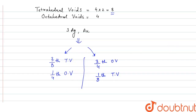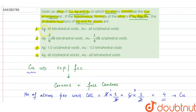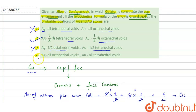So these are the 2 possible arrangements. Looking at the options: Option 1 says silver occupies all tetrahedral voids and gold all octahedral voids — this is wrong, not possible. Option 2 says silver in 3/8 of tetrahedral voids and gold in 1/4 of octahedral voids — this is correct, this is the probable arrangement. Option 3 says silver in half octahedral voids and gold in half tetrahedral voids — also wrong, not possible. Option 4 says silver in all octahedral voids and gold in all tetrahedral voids — also wrong. So the correct option is Option 2.